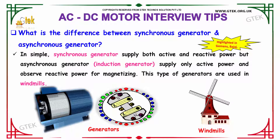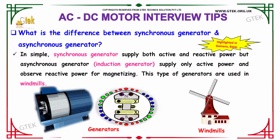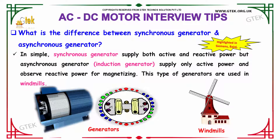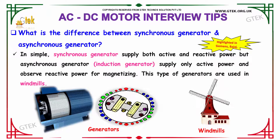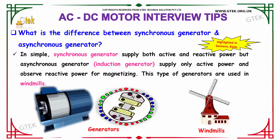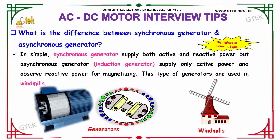What is the difference between synchronous generator and asynchronous generator? The synchronous generator supplies both active and reactive power. But the asynchronous generator, which can also be called an induction generator, supplies only active power and absorbs the reactive power for magnetizing. This type of generator is used in windmills. You can see the representation of a windmill depicted here.